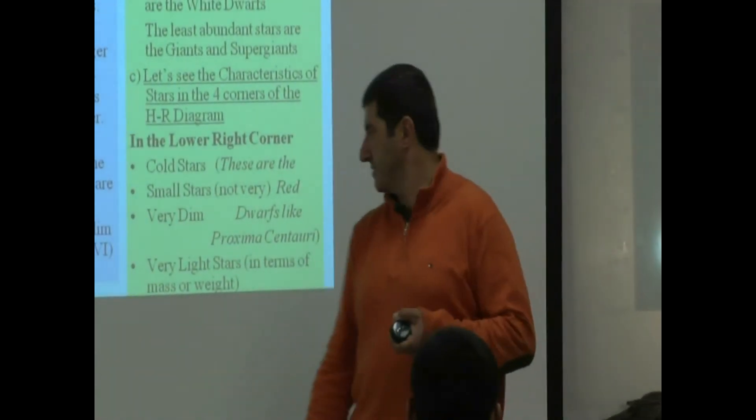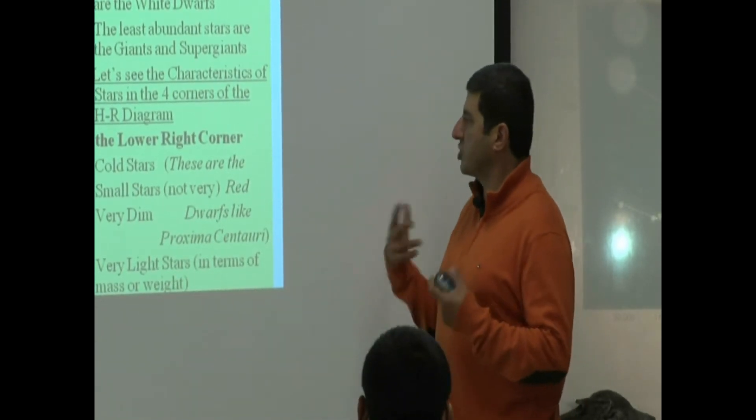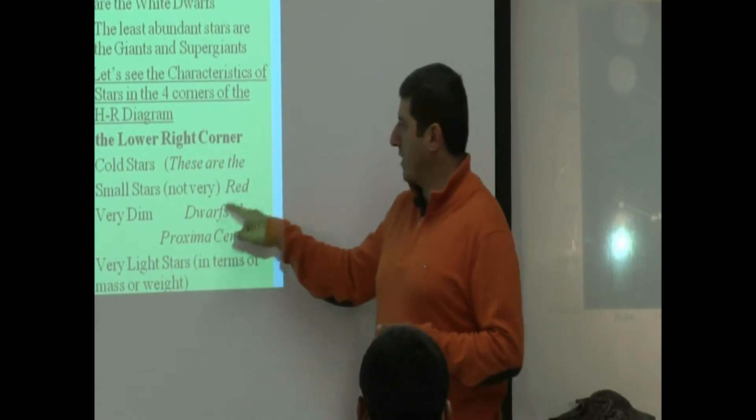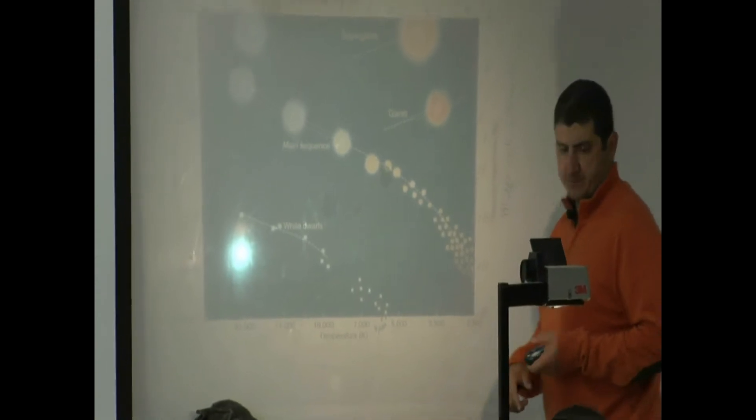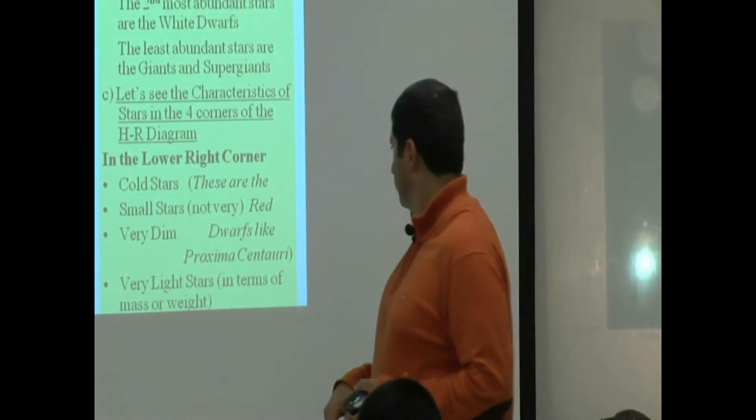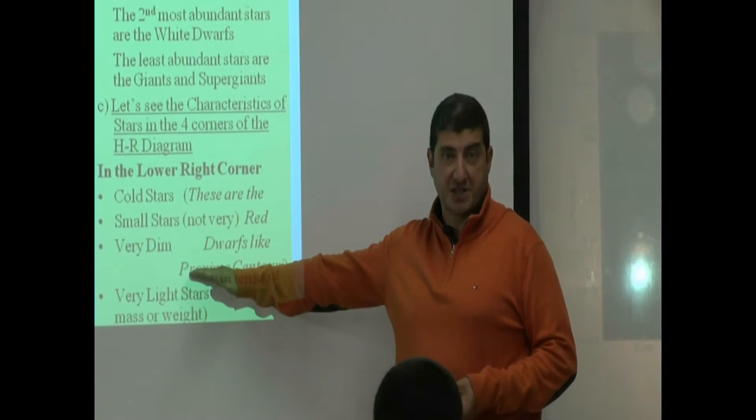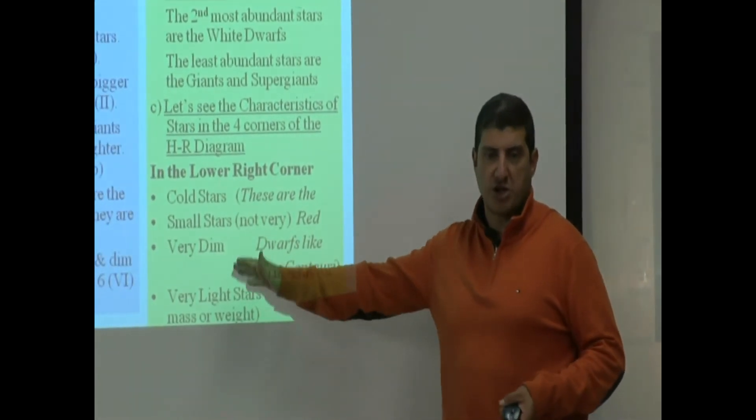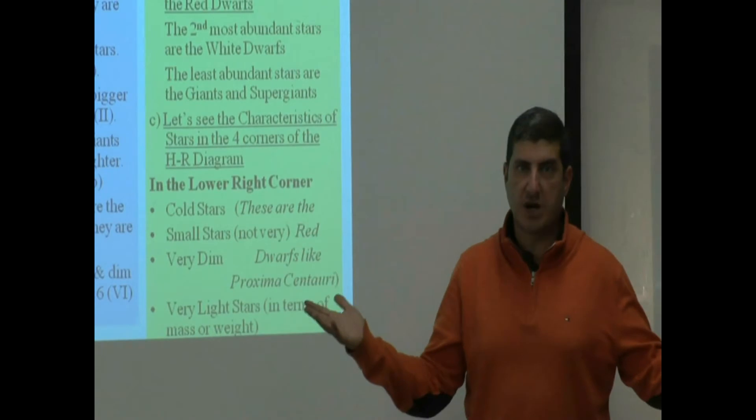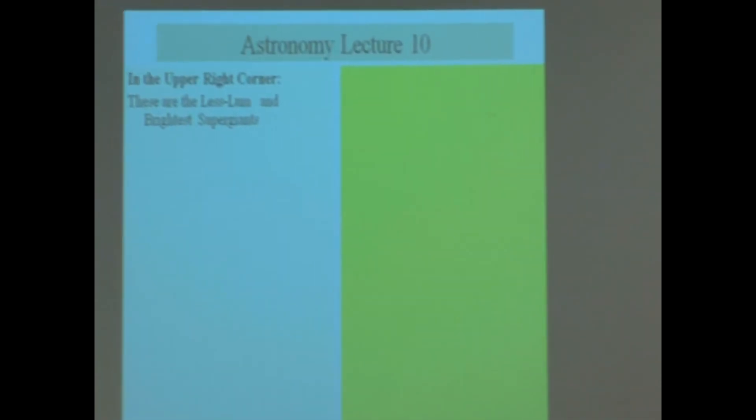What are these stars? Cold red dwarfs. Red dwarfs. And then we saw that they are the most abundant right on the histogram. Example of that: Proxima Centauri, the closest star to us. It's a red dwarf star. That's our closest star, Proxima Centauri, four light years away from the Sun.